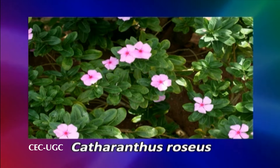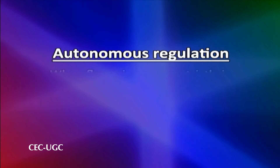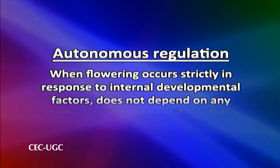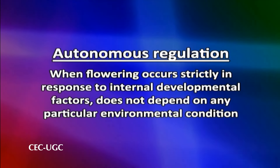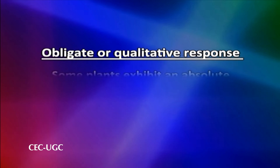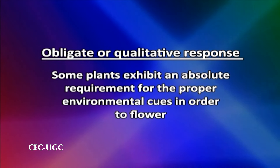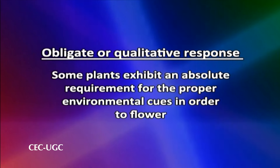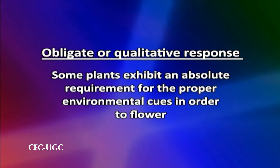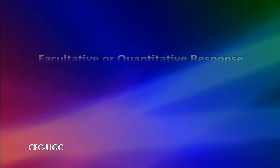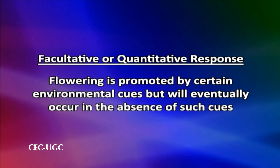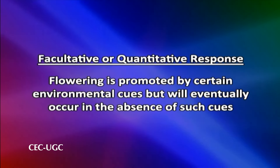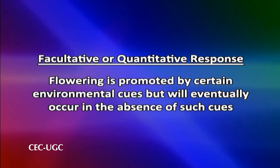Interestingly, there are many plants which flower throughout the year. When flowering occurs strictly in response to internal developmental factors and does not depend on any particular environmental condition, it is referred to as autonomous regulation. Some plants exhibit an absolute requirement for the proper environmental cues in order to flower — this condition is termed as obligate or qualitative response to an environmental cue. In other plant species, flowering is promoted by certain environmental cues but will eventually occur in the absence of such cues, called a facultative or quantitative response.